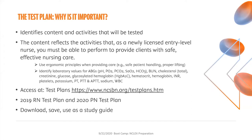On this slide, we have two examples of what is listed in the test plan. The first is in the safe and effective care environment component — it tells you that you need to know guidelines for using ergonomic principles such as safe patient handling and proper lifting. The second is from the physiological integrity component, which lists the exact lab values you need to know: ABGs, BUN, cholesterol, creatinine, glucose, hemoglobin A1c, hematocrit, hemoglobin, INR, platelets, potassium, and so forth. Very detailed information that's really helpful as you study.